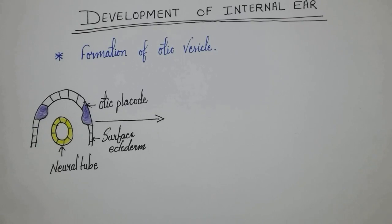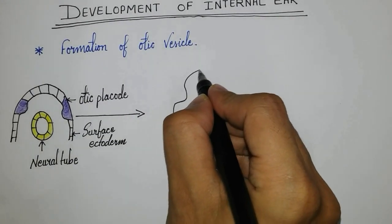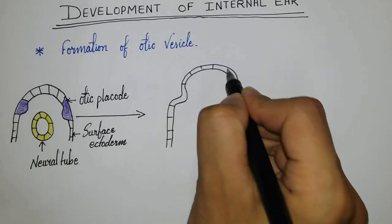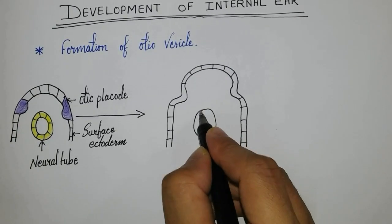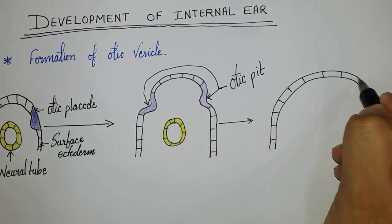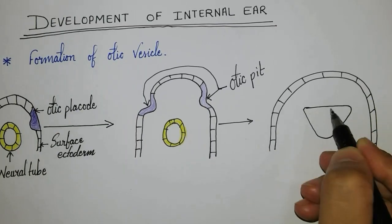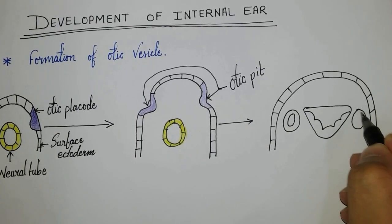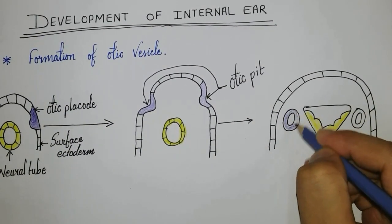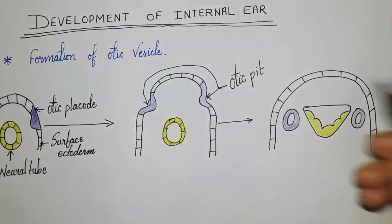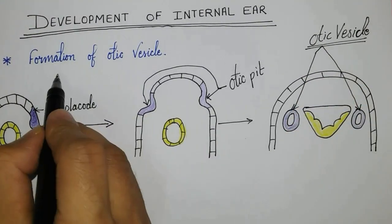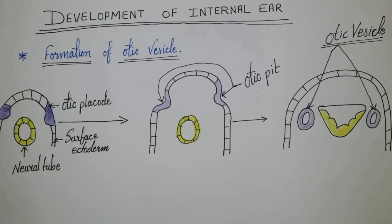The otic placode invaginates under the mesoderm to form an otic pit. You can see in this diagram how the invagination is taking place. The margins of the otic placode approach each other and fuse together to form the otic vesicle. The otic vesicle then gets separated from the surface ectoderm, as you can see on both sides in the diagram.